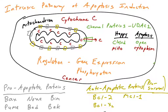We're going to continue our discussion on the intrinsic pathway of apoptosis induction. In the previous video, we talked about cytochrome C, which is normally found in the mitochondrion, and exits the mitochondria into the cytoplasm upon induction of apoptosis, specifically the intrinsic pathway.